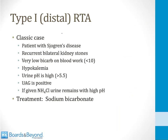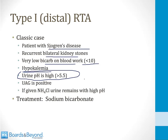The classic case of a type 1 distal RTA is a patient with Sjogren's syndrome or rheumatoid arthritis with a history of bilateral recurrent kidney stones. The bicarb is going to be very low on blood work, often less than 10. There'll also be hypokalemia and a high urinary pH — once you see this, the answer is almost always a distal RTA. The urine anion gap will be positive, and if you challenge them with ammonium chloride, you will find a high urinary pH. The treatment is with sodium bicarbonate, which gives base back to the body to counteract the acidosis.